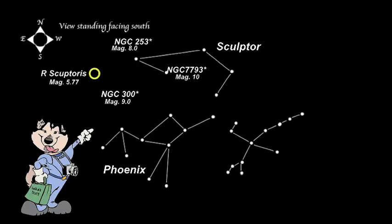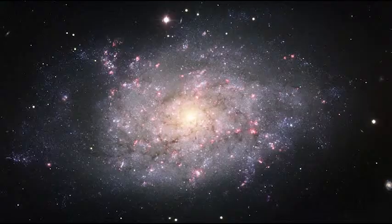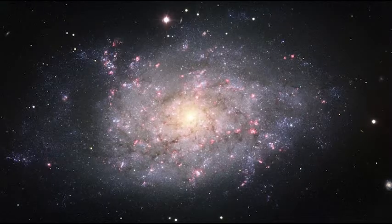NGC 7793 is a magnitude 10 spiral galaxy about 12.7 million light years away.